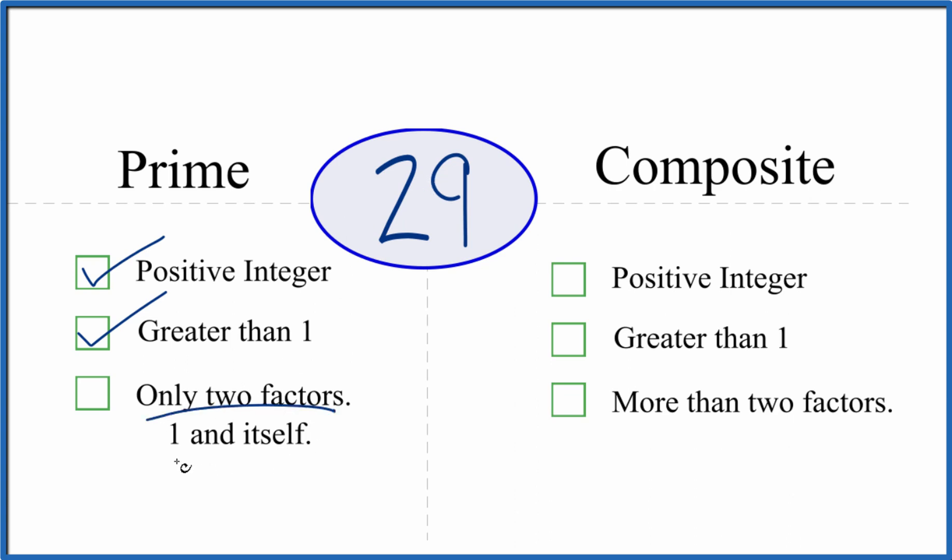And are there only two factors, 1 and 29, that divide evenly into 29? So 1 times 29, that gives us 29. That's 1, 2 factors. But are there any more?